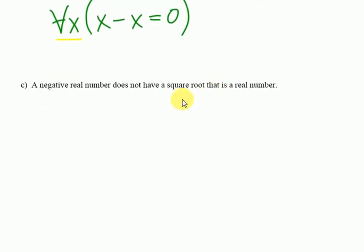Alright, this one's a little bit trickier. It's a similar situation to what we had in a. So there is going to be a conditional involved, but let's read what it says. It says a negative real number does not have a square root that is a real number.